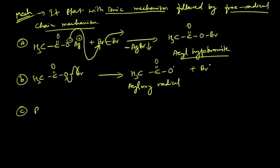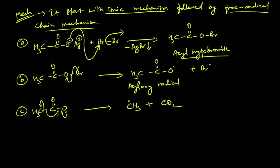In step C, radical rearrangement takes place: the acyloxy radical (CH3-C=O with O radical) is unstable. The electron moves to form a bond, and simultaneously the carbon-carbon bond electrons shift toward the carbonyl oxygen, releasing one electron to the carbon. This gives a CH3 radical plus CO2. CO2 is the driving force — as a gaseous molecule it escapes out, pushing the reaction forward.